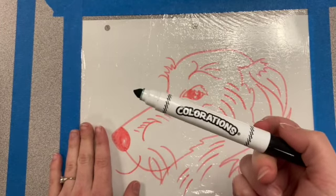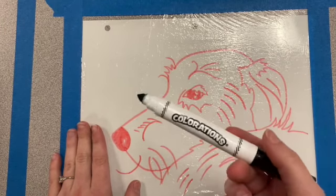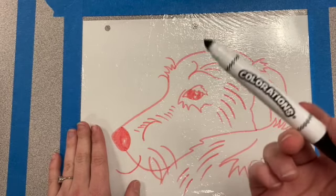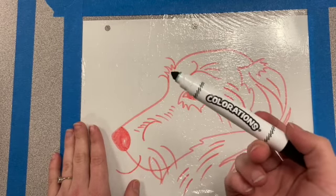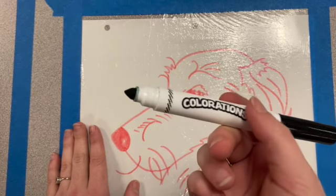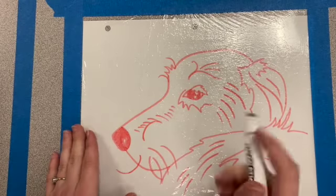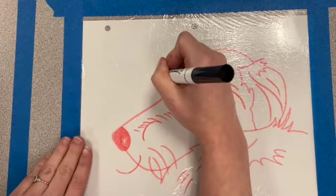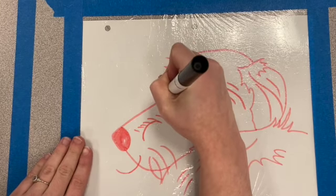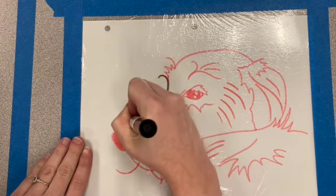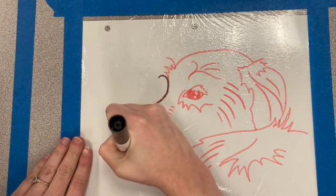We want to be sure that we're using washable markers. I have black here - you don't have to use black, but we're going to go back to our print once it's dry and add some color later. You're going to go into your photograph and trace over all the lines that you've made that you want to copy onto your print.